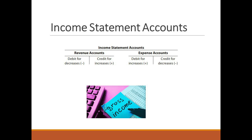The debit and credit rules for income statement accounts are based on their relationship with owner's equity. As shown for balance sheet accounts, owner's equity accounts are increased by credits. Because revenue increases owner's equity, revenue accounts are increased by credits and decreased by debits. Because owner's equity accounts are decreased by debits, expense accounts are increased by debits and decreased by credits.